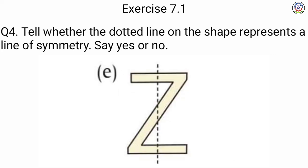Next is E — E में हम लोग को alphabet Z दिया गया है. It can never be cut by a line of symmetry, so we will write here no.